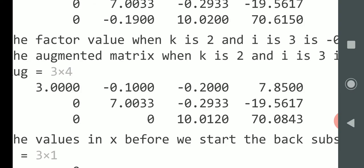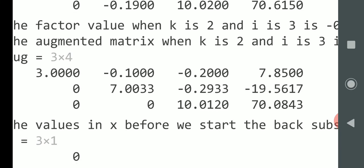We got it into upper echelon form. We didn't get it into, you know, row 1, 1 is 1. And row, sorry, position 1, 1 is 1. And position 2, 2 is 1. And position 3, 3 is 1. But it's the same thing. So, we have there X3 would be equal to 70.0843 divided by 10.01. And once we have X3, we can then back substitute. I said Z3, X3. We can back substitute to find X2. And once we have X2 and X3, we can back substitute again to find X1.